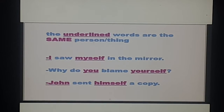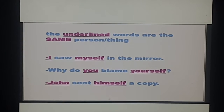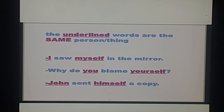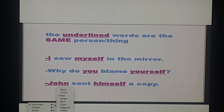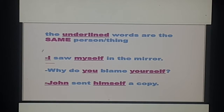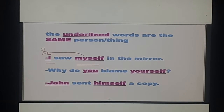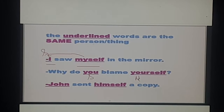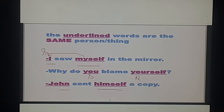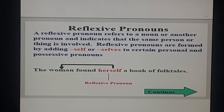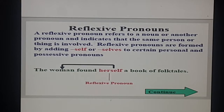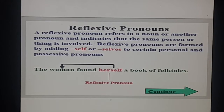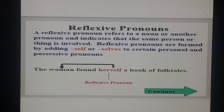The underlined words refer to the same person or thing. See: 'I saw myself' - the subject is 'I', so we use 'myself' as the reflexive pronoun. 'Why do you blame yourself?' - 'you' is the subject and 'yourself' is the reflexive pronoun. 'John hurt himself' - 'John' is the subject and 'himself' is the reflexive pronoun. A reflexive pronoun refers to a noun or another pronoun and indicates that the same person or thing is involved. Reflexive pronouns are formed by adding 'self' or 'selves' to certain personal and possessive pronouns.